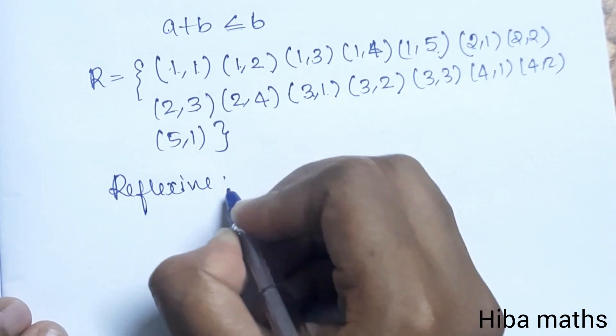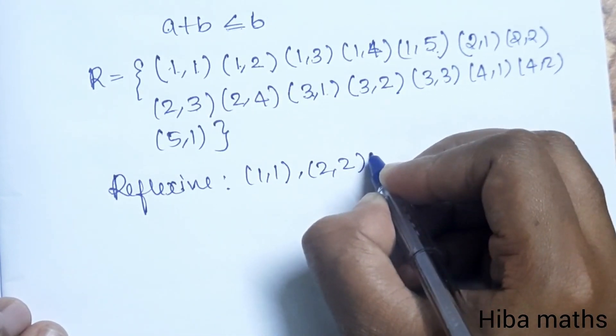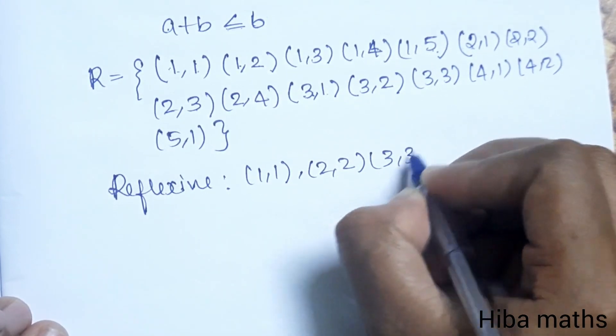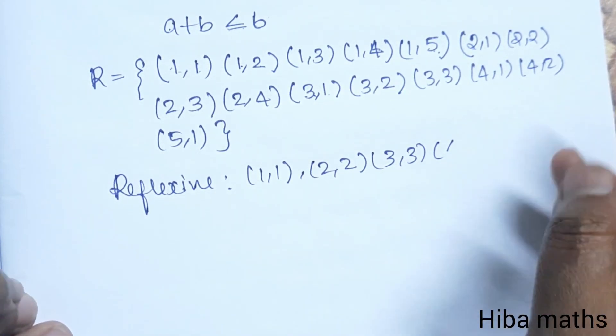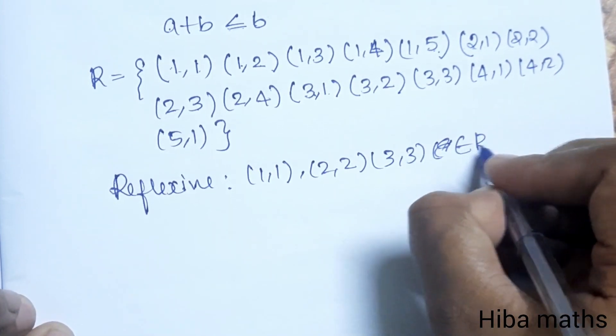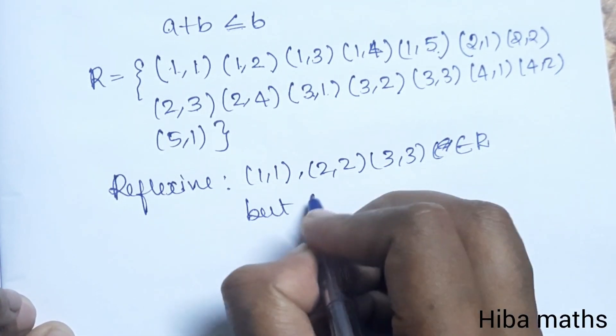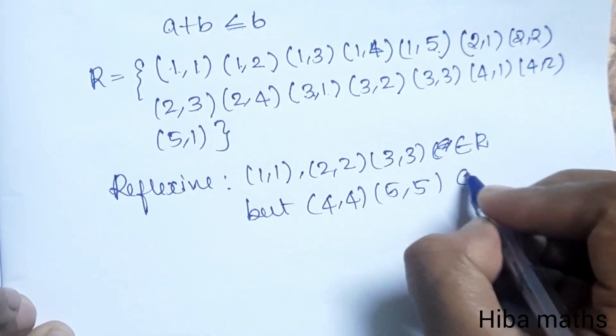For reflexive: (1,1), (2,2), (3,3) are elements of R. But (4,4) would be 8, and (5,5) would be 10, so they are not elements of R. Therefore, it is not reflexive.